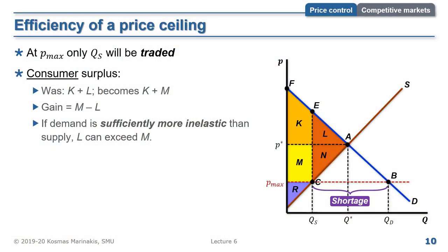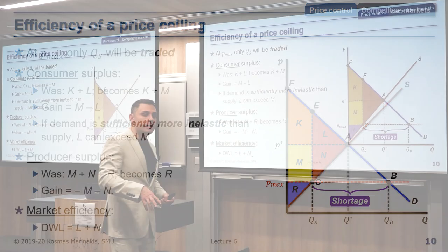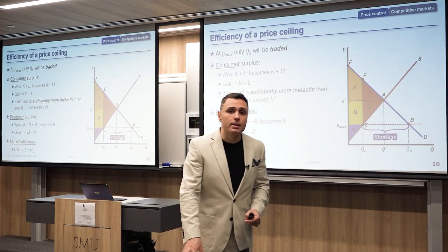The producer surplus was M plus N plus R at price P*. Now at P_max, producers receive only R, losing both M and N. Area M transfers to consumers; area N becomes part of the deadweight loss. So the gain for producers is purely negative — they lose areas M and N. Total market efficiency: deadweight loss is L plus N, and this is the cost of the price ceiling policy.